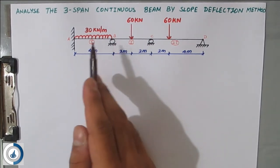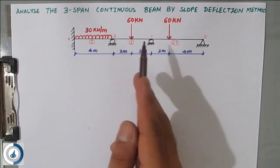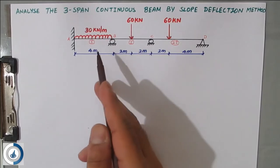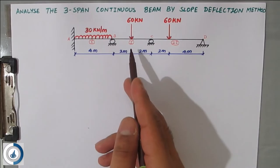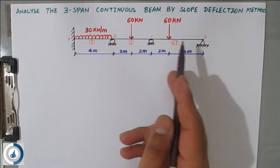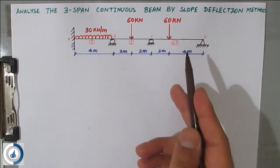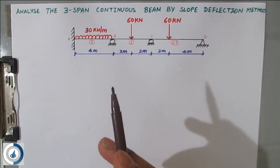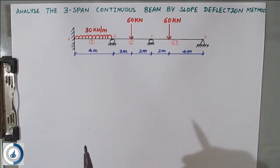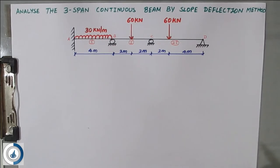There is a three-span beam with different loadings: the first is a UDL, the second is a symmetrical loading, and the third is an unsymmetrical loading on the third span. We have to solve this by the slope deflection method. I will share links in the description box for all the slope deflection method videos so you can go through those and be thorough on those problems as well.